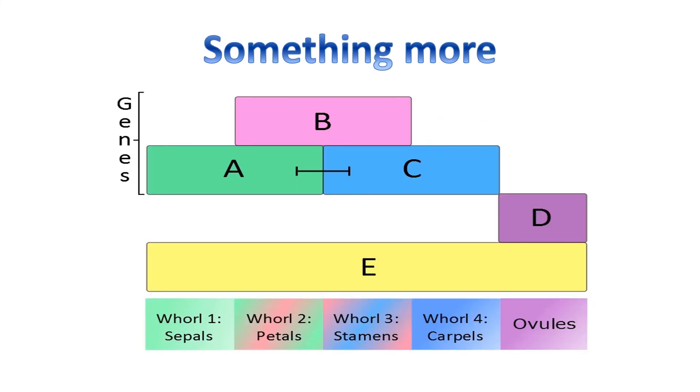ABC triple mutants do not form flowers, but neither does ectopic expression of ABC. Four SEPALLATA genes, that is E genes, act together along with ABC genes to specify the floral organ identity. The D genes are responsible for ovule development, and E genes are also required for ovule development.